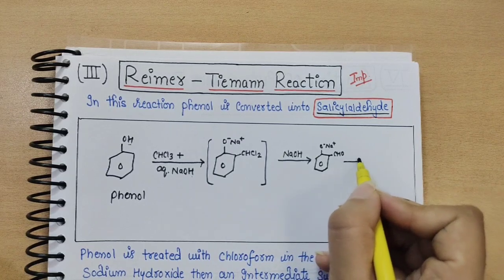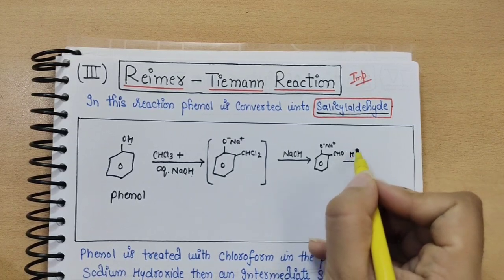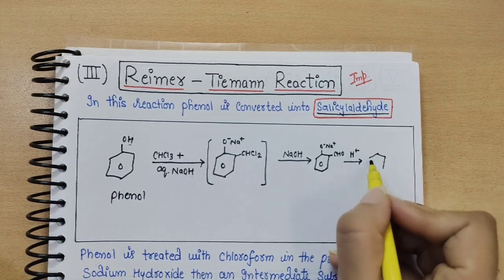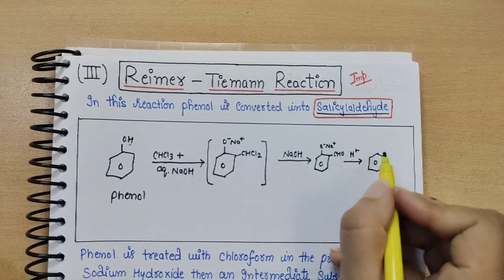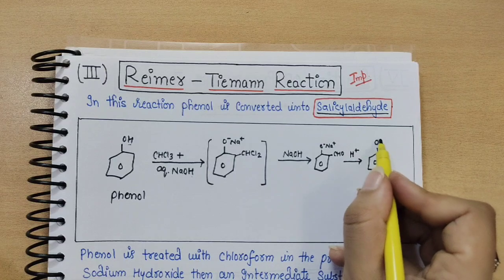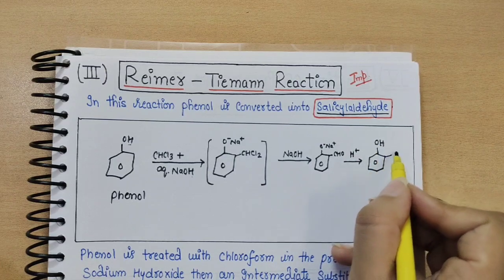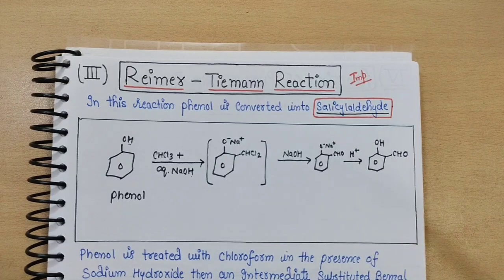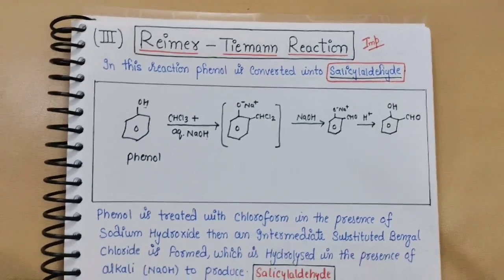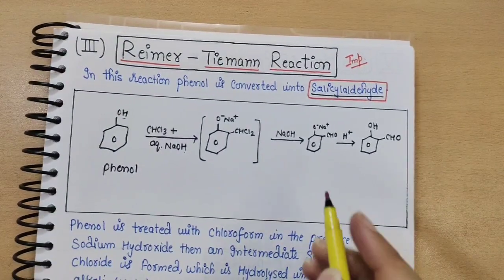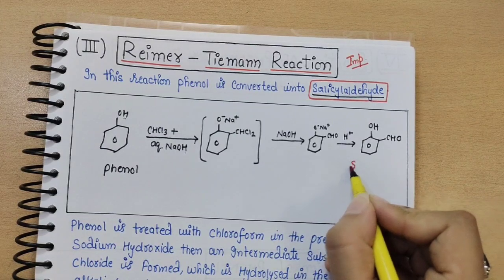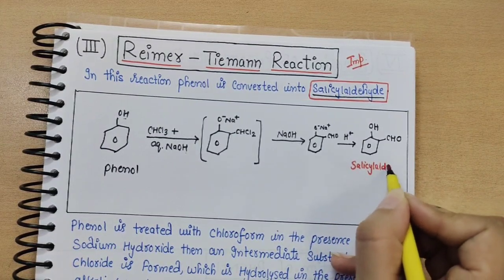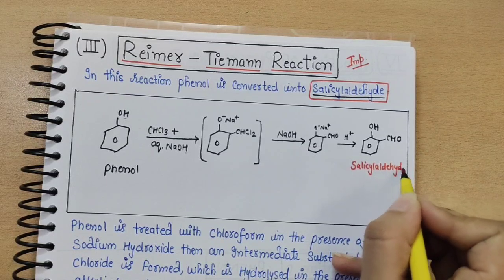After the CHO group is formed at the ortho position, acidification is carried out. Oxygen needs hydrogen, which is supplied by acidification. You then directly get the aldehyde group — CHO — which gives you the product called salicylaldehyde.